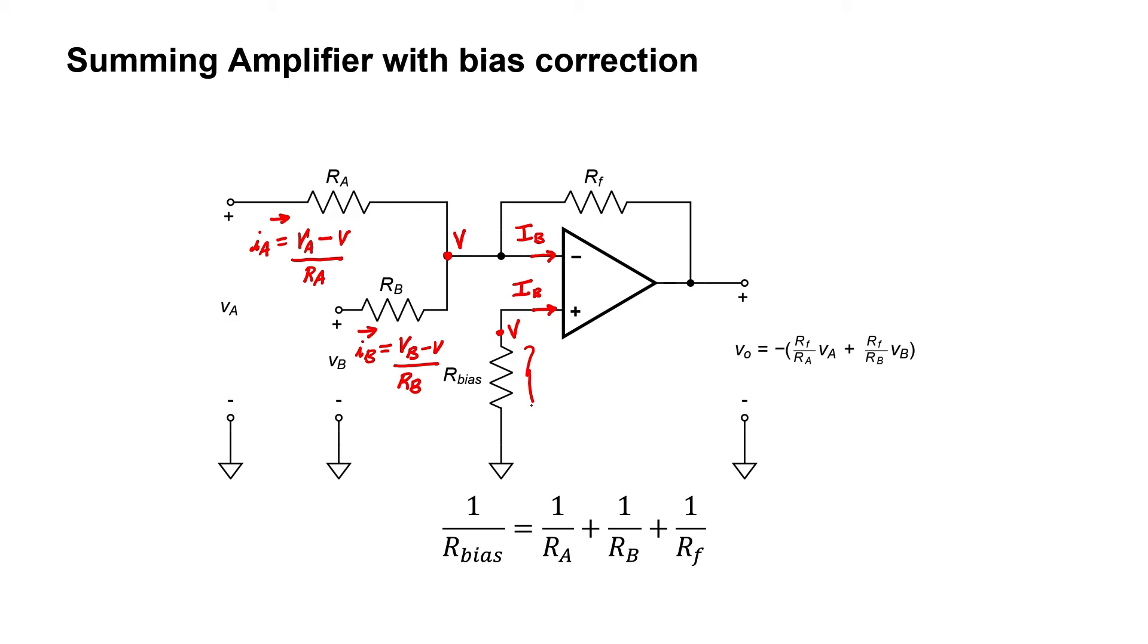Applying Ohm's law across my bias resistor, V equals minus Rb times Ib. Let's call the current through the feedback resistor I sub F, and again apply Ohm's law in order to find it. We have V on the left side and V out on the right side.